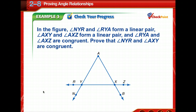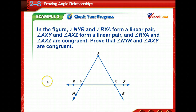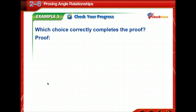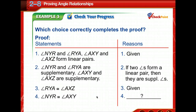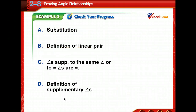Time to check your progress. Draw your picture and note what's given: these two form a linear pair, and these two form a linear pair. We're told that angle RYA and angle AXZ are congruent, and we're trying to prove that angle NYR and angle AXY are congruent. NYR and RYA are supplementary, and AXY and AXZ are supplementary. Since they are supplementary to congruent angles, the angles are congruent.